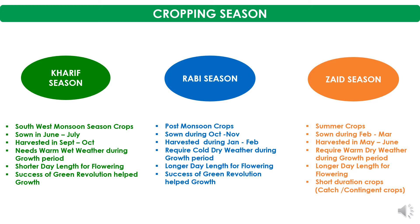Rabi season crops are post-monsoon crops, meaning the season starts after the end of the rainy season. For Rabi season, sowing takes place during October to November and harvesting from January to February. These crops require cold and dry weather during the growth period.